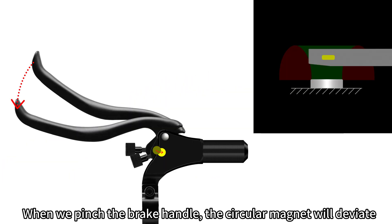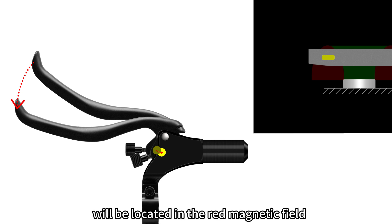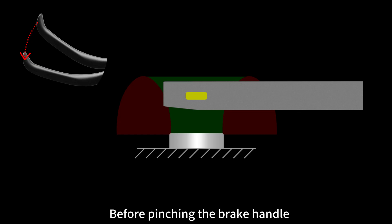When we pinch the brake handle, the circular magnet will deviate, and the sensing component originally located in the green magnetic field will be located in the red magnetic field. At this point, the broken wire will open before pinching the brake handle.